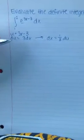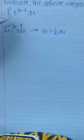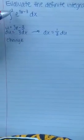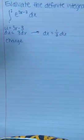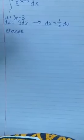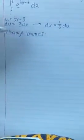Before going any further, we want to change the bounds. Right now the bounds are from 1 to 2. We're going to substitute those x values into our u equation and find out what our u is going to be.